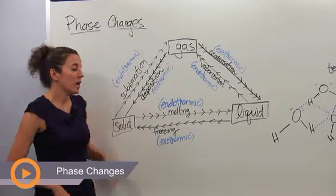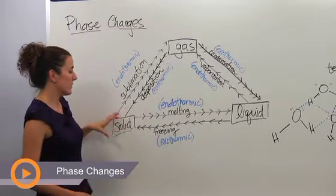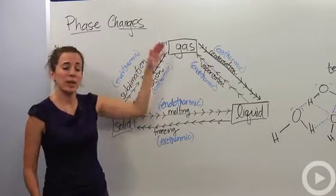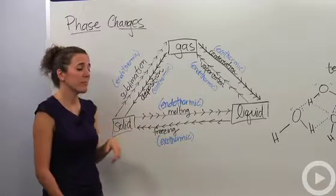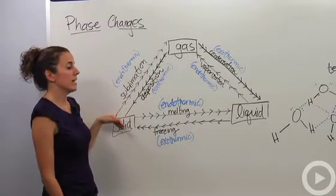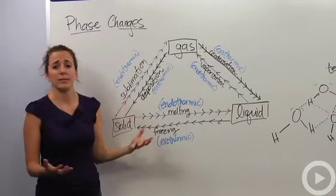We're going to talk about phase changes, going from different forms of matter for solid, liquid, and gases and how they interact with each other and how they change from one phase to another. So let's use this as an example, as a good diagram to show us how these things interact with each other.